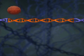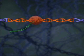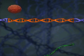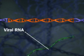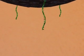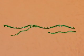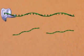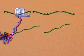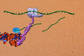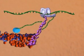Eventually, transcription produces viral RNA. The viral RNA travels to the host cell's cytoplasm, where some is reserved for new viral genomes and some is translated, producing new viral proteins.